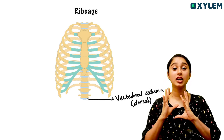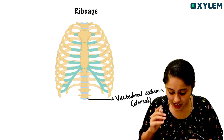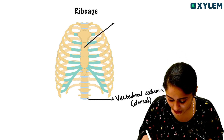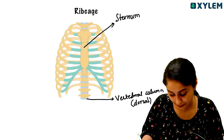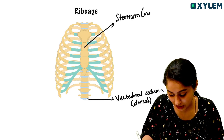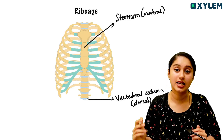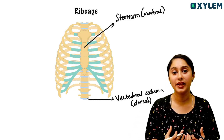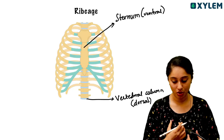Dorsally, the rib cage is attached to the vertebral column. In front, on the ventral side, there is a flat bone called the sternum. Sternum is the flat chest bone.